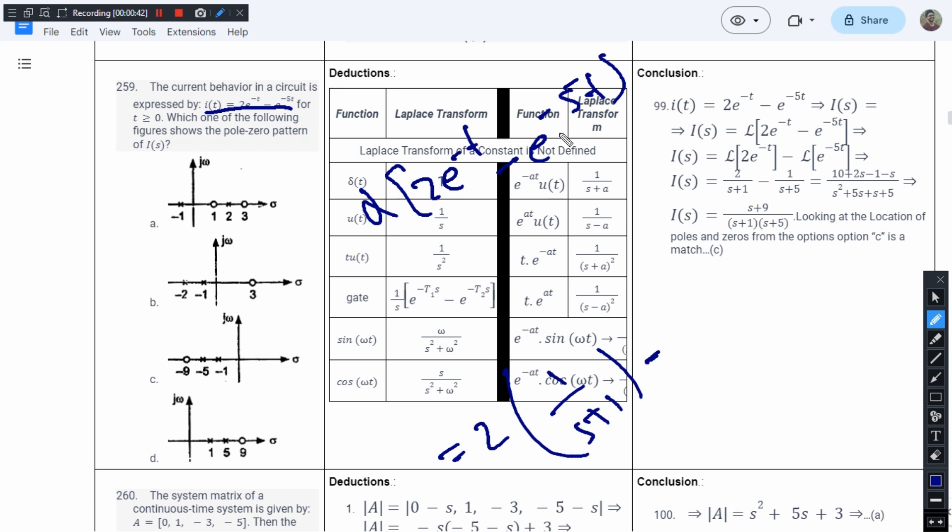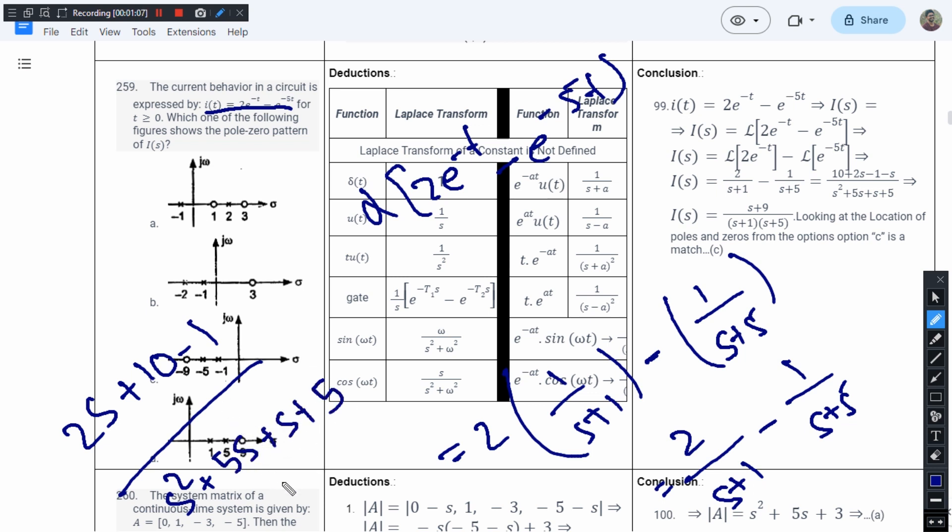We have a minus, so the 5t term gives 1/(s+5). This will be 2/(s+1) minus 1/(s+5). By cross multiplication I have 2s plus 10 minus 1 divided by s^2 plus 5s plus s plus 5. So this is s^2 plus 6s plus 5.